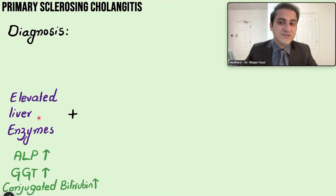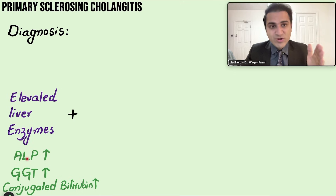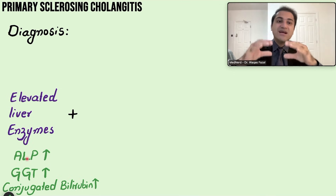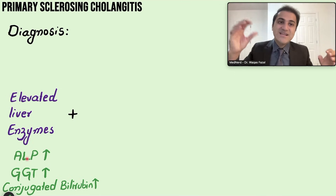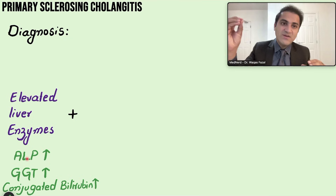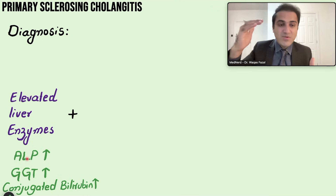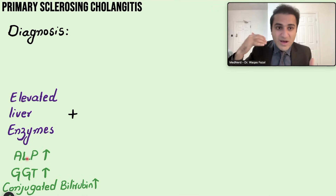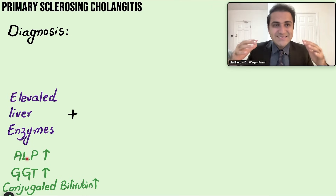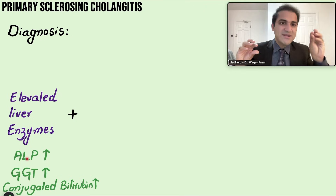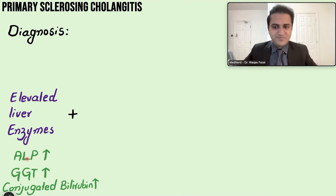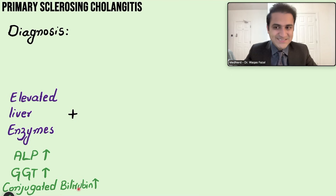To diagnose PSC, elevated liver enzymes are key. ALP and GGT are present in the bile duct cells — when these ducts are damaged, ALP and GGT rise significantly. ALT and AST are present in liver cells, not ducts, so they are only mildly elevated. Conjugated bilirubin is high because it cannot drain into the intestines.